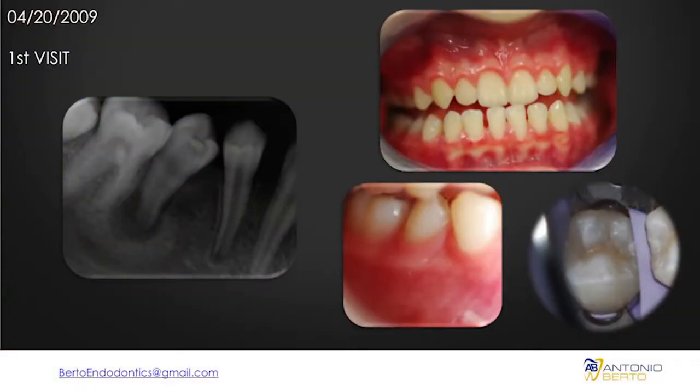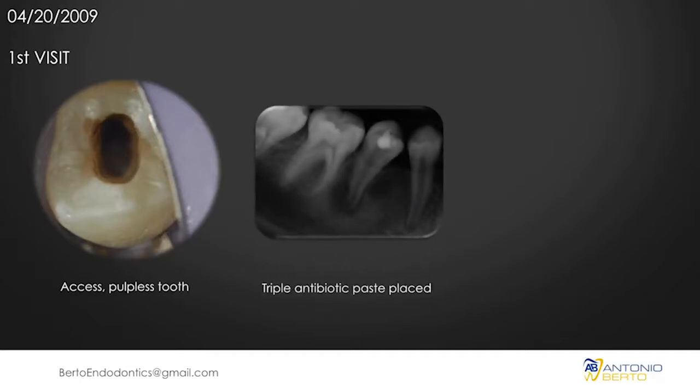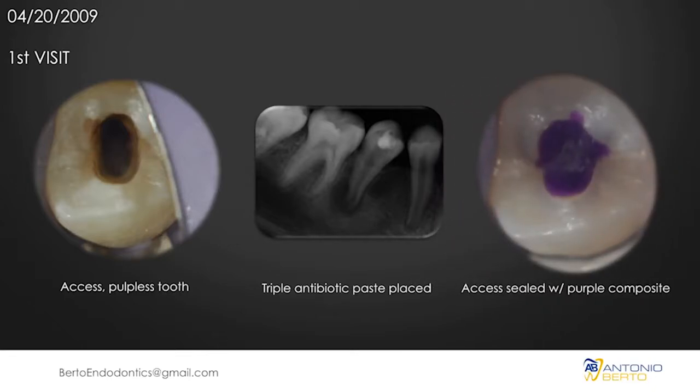Now let's have a look at a real-life case. This is a 12-year-old female Caucasian patient who came to our office with an open apex tooth. When we did our vitality test, the tooth didn't respond to cold and was slightly sensitive to percussion. Our diagnosis was pulpal necrosis with symptomatic apical periodontitis. When we accessed the tooth, we found what we were expecting — a necrotic, pulpless tooth. We irrigated, placed our medication, and that's the final x-ray and picture with resin material. It's very important to obtain a really good coronal seal.